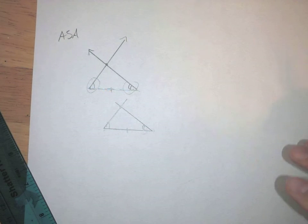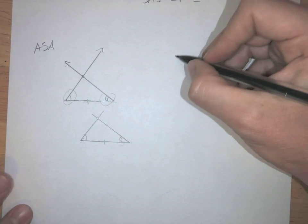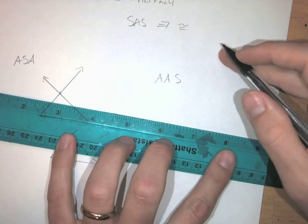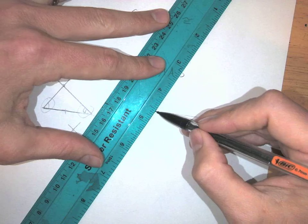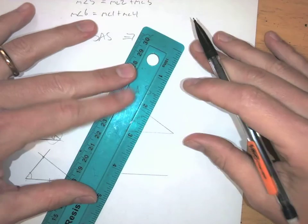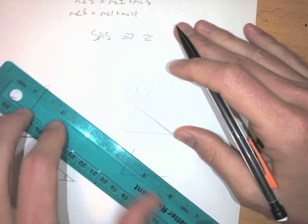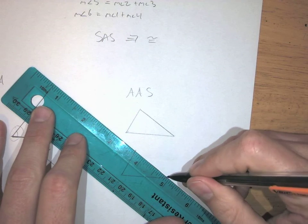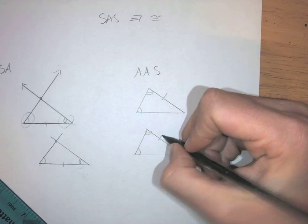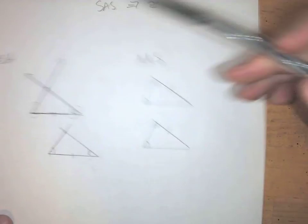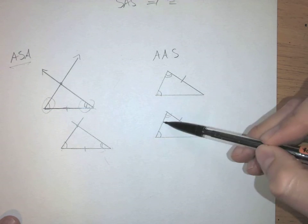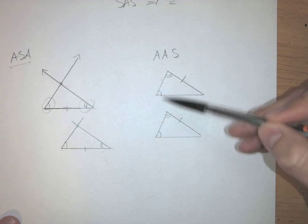That's similar to the side-side-side reasoning we showed. Now the angle-angle-side is very similar to angle-side-angle. Let's say you have two triangles with angle-angle-side: this angle is congruent to this angle, this angle is congruent to this angle, and this non-included side is congruent to this side. You might think, that's angle-side-angle — but the order matters. For angle-side-angle, the side has to be the included side. This is a different setup.